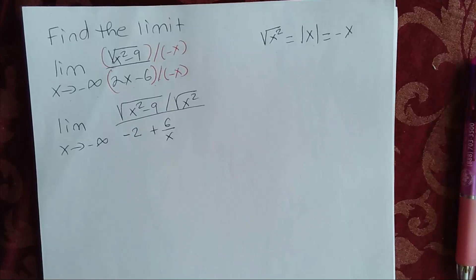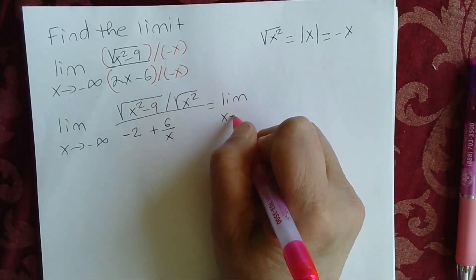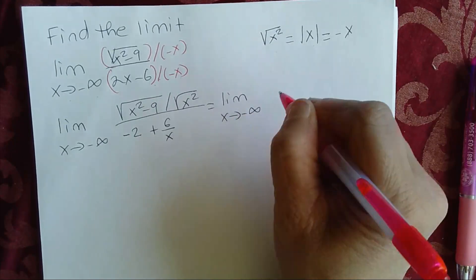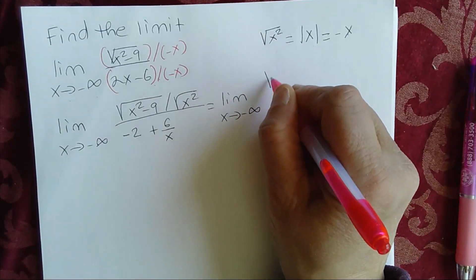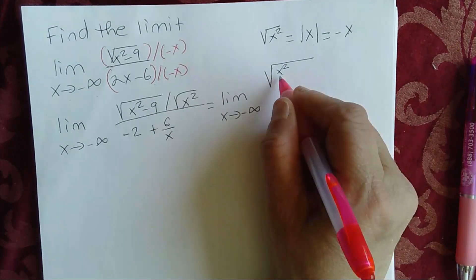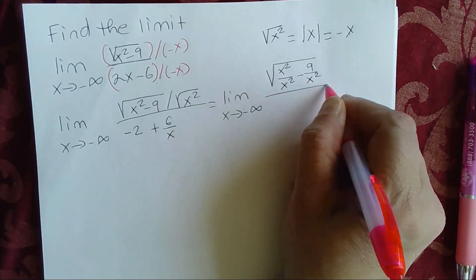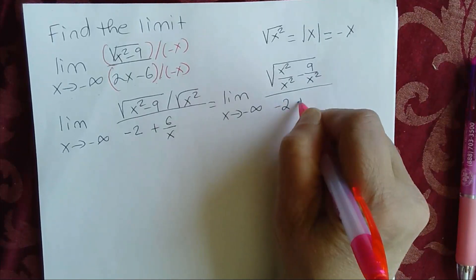Let's go ahead and simplify the numerator. The limit as x approaches negative infinity of x squared divided by x squared, minus 9 over x squared, divided by negative 2 plus 6 over x.